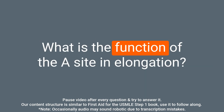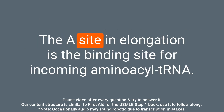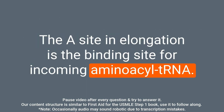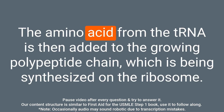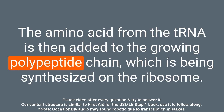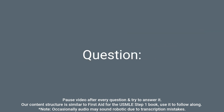Question: What is the function of the A site in elongation? Answer: The A site in elongation is the binding site for incoming aminoacyl-tRNA. The amino acid from the tRNA is then added to the growing polypeptide chain, which is being synthesized on the ribosome.